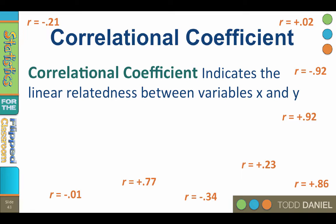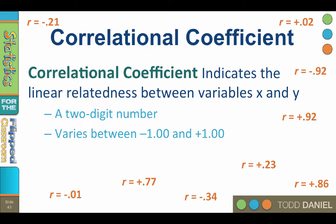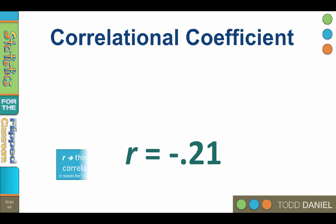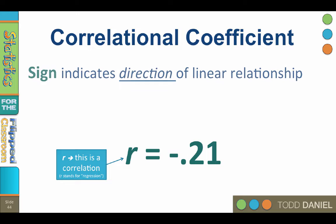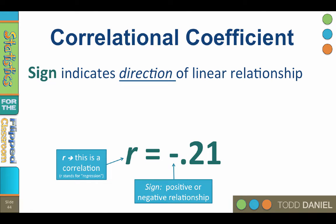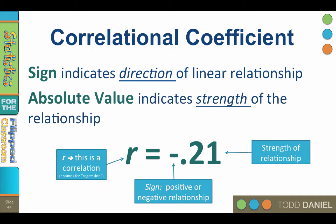You see some examples of correlational coefficients. All of the coefficients that we work with will share some things in common. A correlational coefficient is a two-digit number. It varies between negative one and positive one, and it has a plus or minus sign, and each part tells us something important. The r tells us that this is a correlation. The sign, positive or negative, indicates the direction of the linear relationship. The absolute value of the correlation indicates the strength of the relationship. Correlations close to either negative one or positive one are very strong.